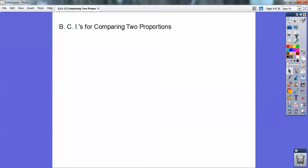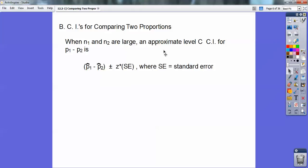So here's our formulas coming up, our confidence intervals for comparing two proportions. When n1 and n2 are large, your sample sizes are large, an approximate level C confidence interval for the difference of your proportions, P1 minus P2, is you just do your sample proportions, P1 minus P2, plus or minus your Z score. So whatever your confidence interval is for your Z score, times your standard error. And your standard error is this formula right here.